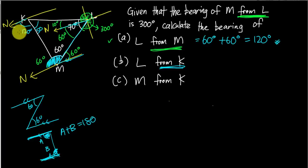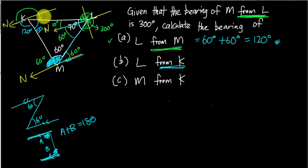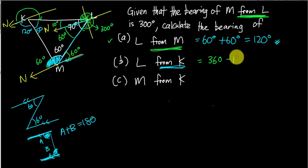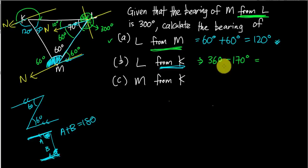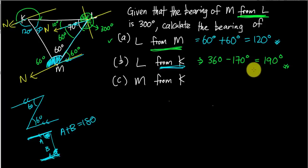Now that I know both angles, I can get the answer. From the north of K, rotating to line KL goes past 180°, so I use 360° minus 170°. That's 120° plus 50° equals 170°, and 360° minus 170° equals 190°. The bearing of L from K is 190°.